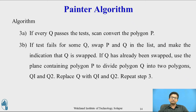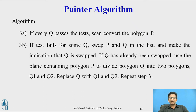That is, if overlap occurs: in step 3A, if every Q passes the test, scan convert polygon P — that is, draw polygon P onto the viewport. In step 3B, if the test fails for some Q, then swap P and Q in the list and make an indication that Q has been swapped.